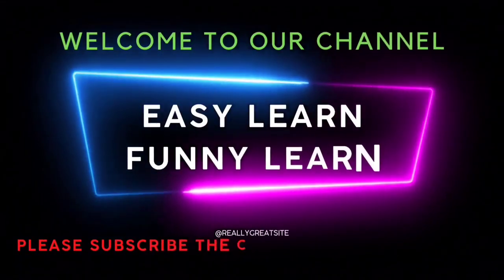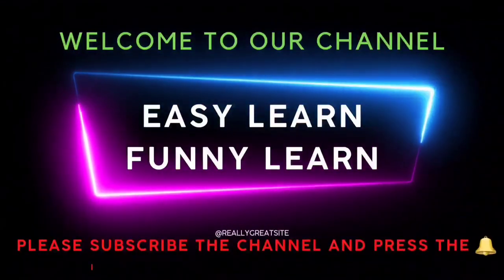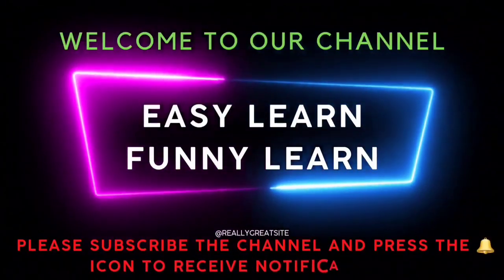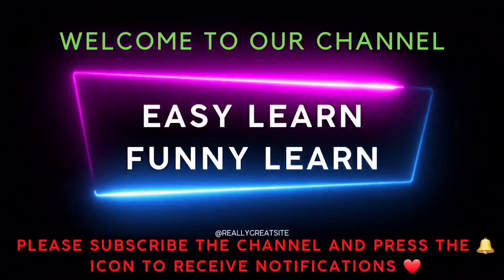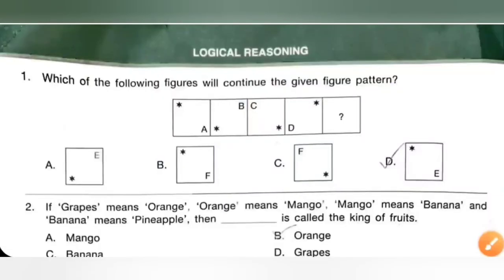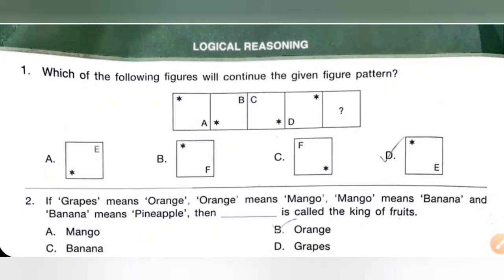Welcome to our channel — Easy Learn, Funny Learn. Please subscribe to the channel and press the bell icon to receive notifications. Hi my dear kids. In this video we are going to solve the Class 4 NCO National Cyber Olympiad ZB 2022 question paper. In part 1 we are going to solve questions 1 to 20, and in part 2 we will solve the remaining questions. The first section is Logical Reasoning.